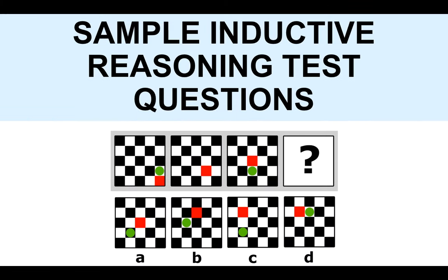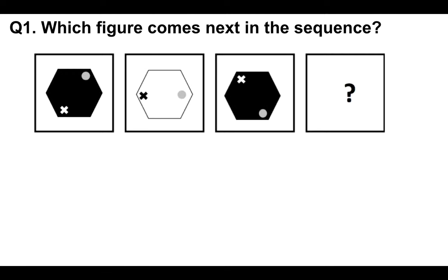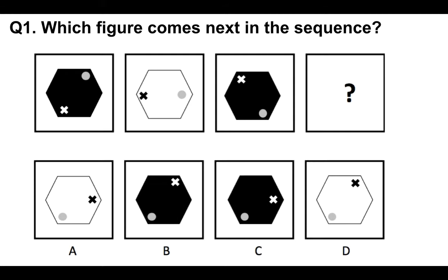Let's take a look at some sample inductive reasoning test questions. We're going to work through them at a slow pace, and I'm going to get you guys to try them yourself. Question number one — which figure comes next in the sequence? We are given three shapes, three figures, and we have to decide which one comes next in the sequence from multiple choice answers. We have A, B, C and D below.